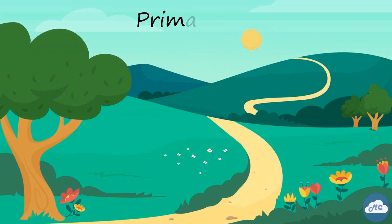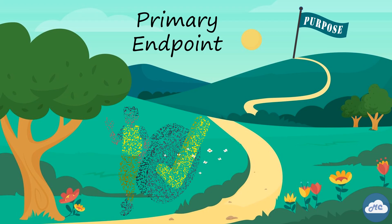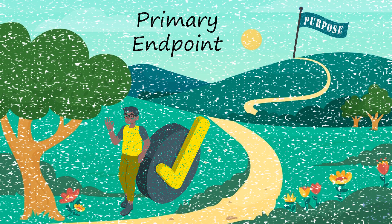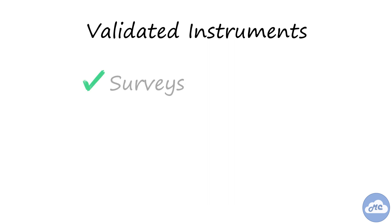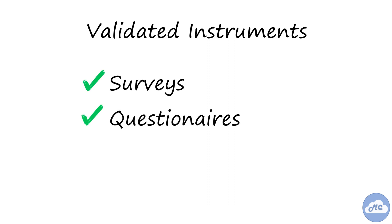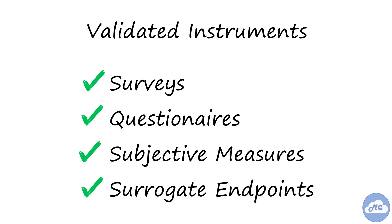The primary endpoint should be appropriate for the study purpose and measured using validated techniques and methods. Validated instruments ensure the production of reliable, accurate results. This is especially important for surveys, questionnaires, subjective measures, and surrogate endpoints.